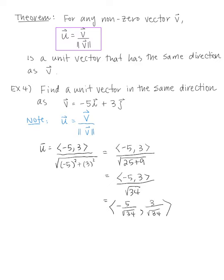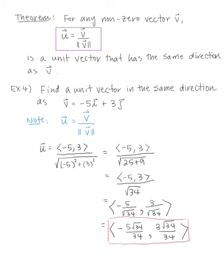Rationalizing the denominator gives negative 5 root 34 over 34 comma 3 root 34 over 34. That is our unit vector, which means if I compute its norm, the length should be 1.